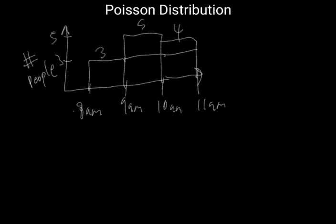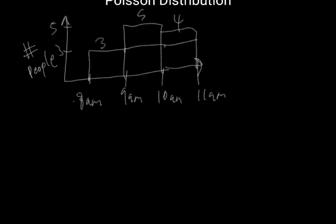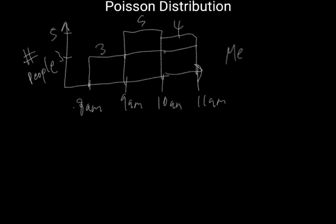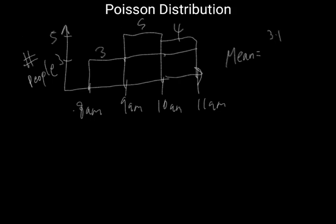So what's the average number of people that enter the store per hour? The mean is equal to 3 plus 5 plus 4 divided by 3, which is equal to 12 over 3, which is equal to 4. The average number of individuals that enter the store per hour is 4. The symbol used for the mean in the Poisson distribution is lambda, so lambda is equal to 4.